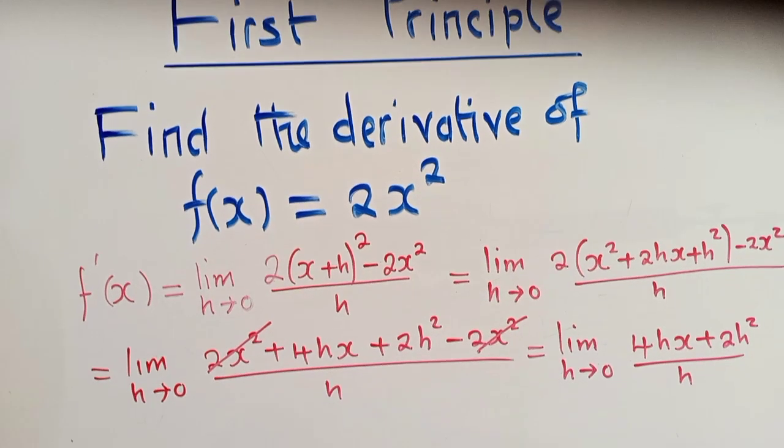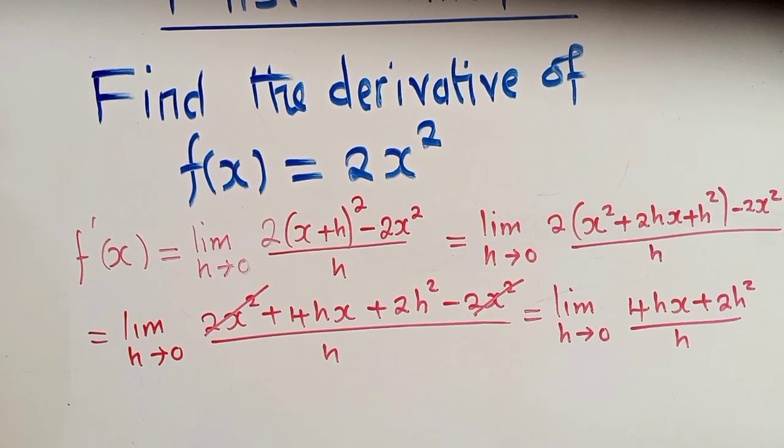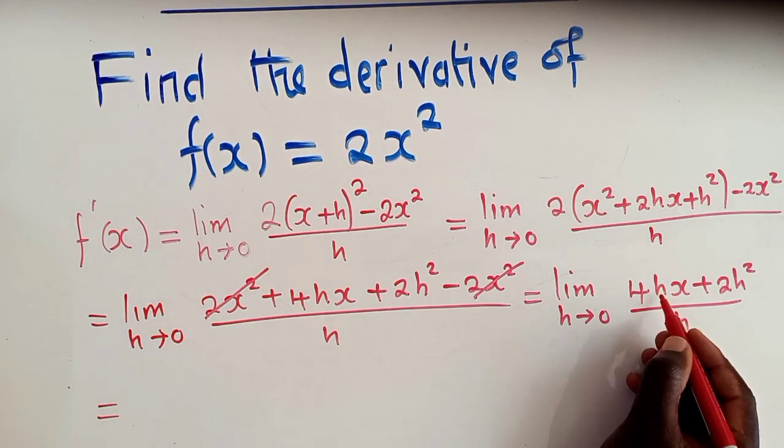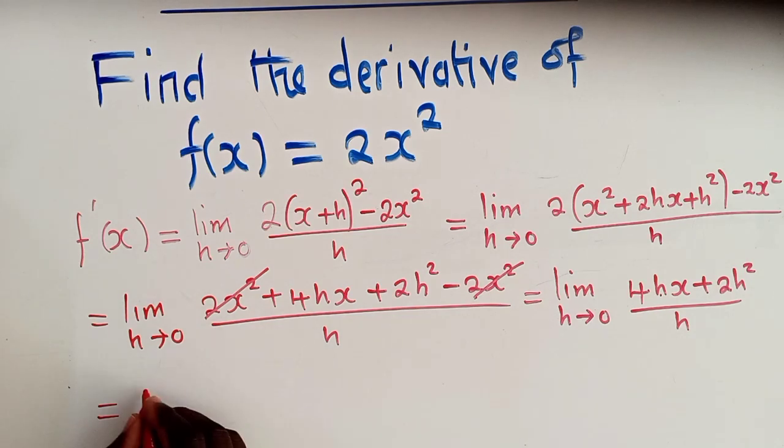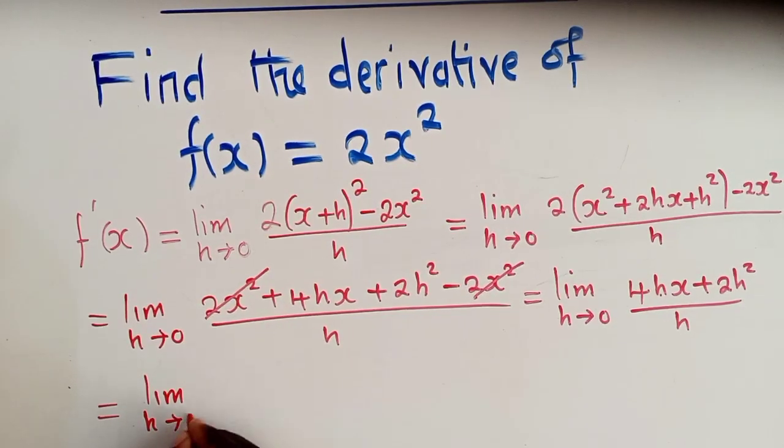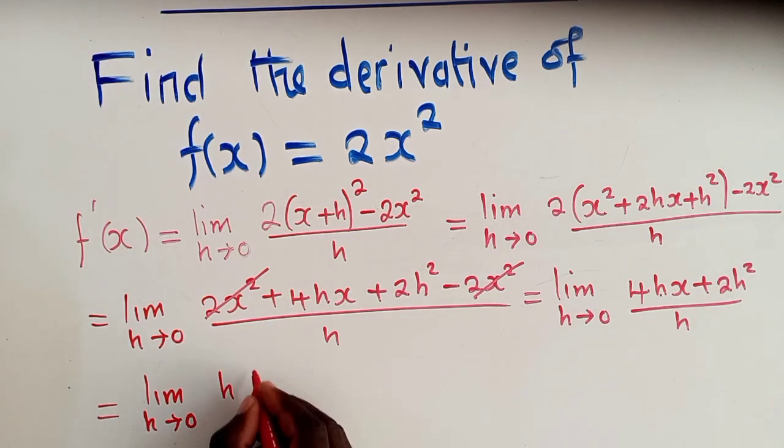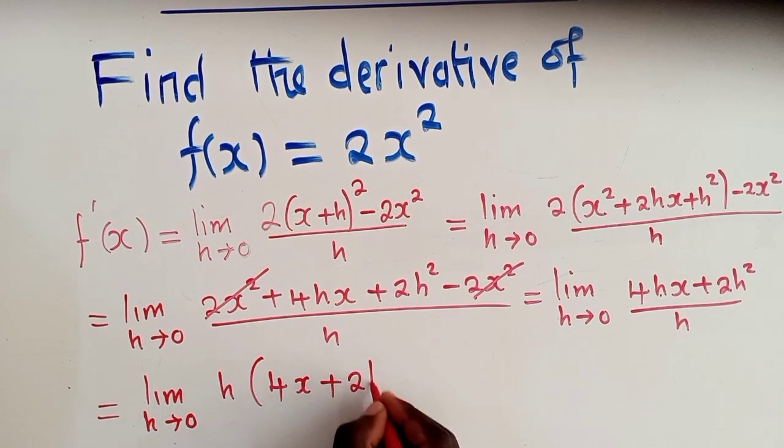So now from this stage, we can now factorize. We say equal to. So if you can see, h is found here and here. So it can be factored out. We say limit as h approaches 0. We've got h outside. We shall remain with 4x plus 2h and the h down here.